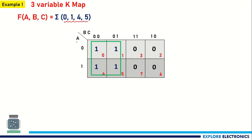First, let me look at A values. A is 0 here and it is changing to 1. If any value is changing from 0 to 1, we neglect it. So there will be no A in this group expression. Let me look at BC. Here B is 0 and here also B is 0, so it is B̄ — it is not changing. C is 0 and it is changing to 1, so I am going to neglect C also.